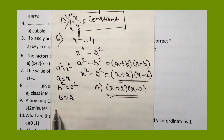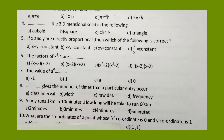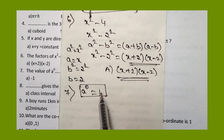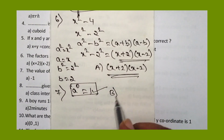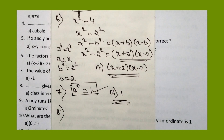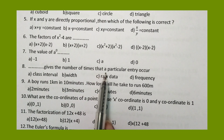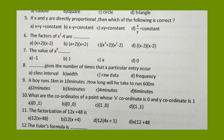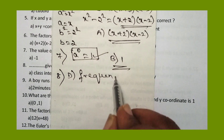Now the seventh question: what is the value of A to the power of 0? We know that anything to the power of 0 is always 1. So our answer is 1, option B. Moving to the eighth question: dash gives the number of times that a particular entry occurs. The number of times a particular entry occurs is called frequency. Option D, frequency, is the answer.